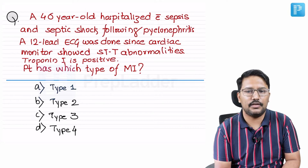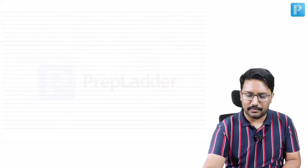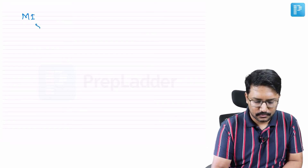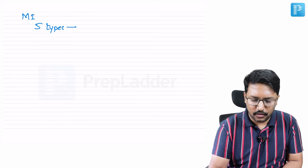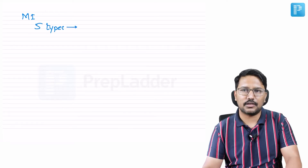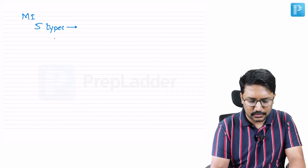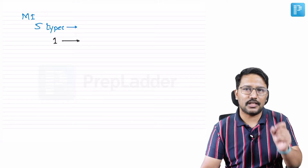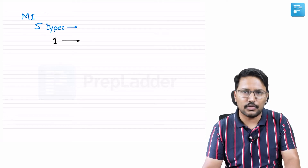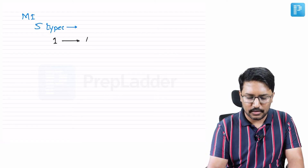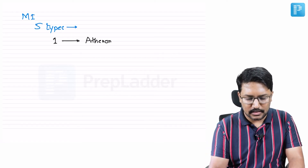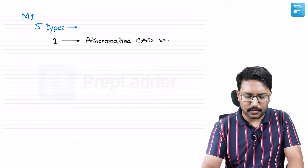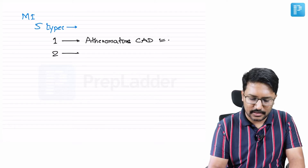The question asks whether it is type 1, 2, 3, or 4 myocardial infarction. Myocardial infarction is classified into five types. MI need not always be due to atheromatous plaque dysfunction or rupture. If MI is because of atheromatous plaque rupture or plaque dysfunction, it is Type 1. Type 1 is where there is a primary abnormality inside the coronary artery related to atheromatous changes — atheromatous CAD leading to plaque rupture or dysfunction.